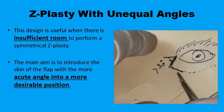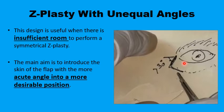There are situations such as a contracted scar close to the eye affecting the eyelids where placing one limb of the Z-plasty in a relaxed skin tension line may make it impossible to place the other limb in another relaxed skin tension line. Because of this, variations to the standard Z-plasty may need to be considered — provided the angle is not less than 30 degrees so as not to jeopardize the viability of the tip of the smaller flap, unequal angles may be used.